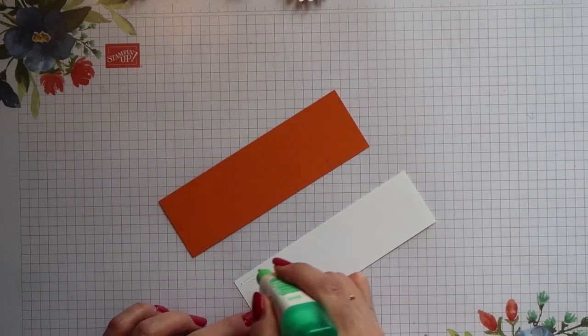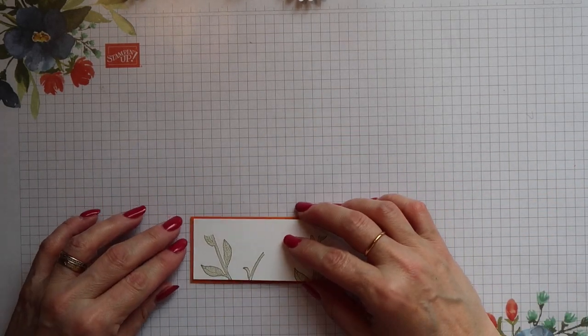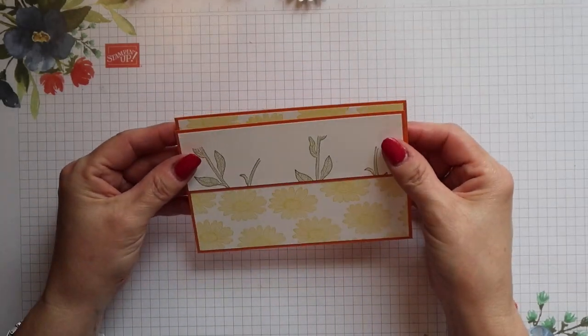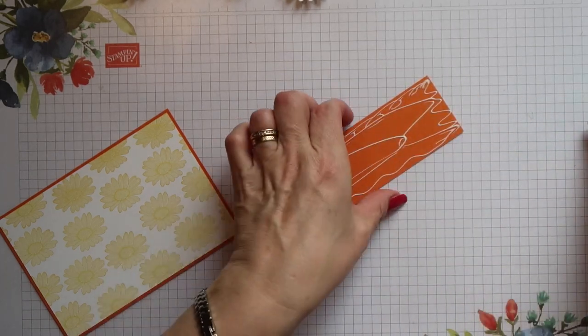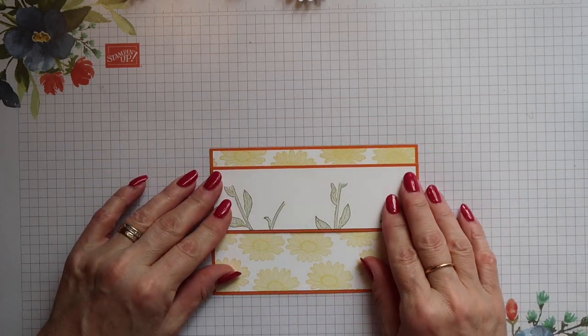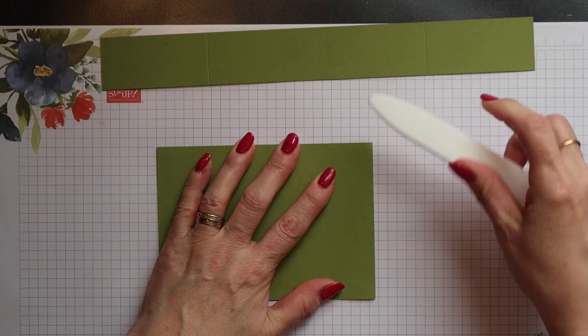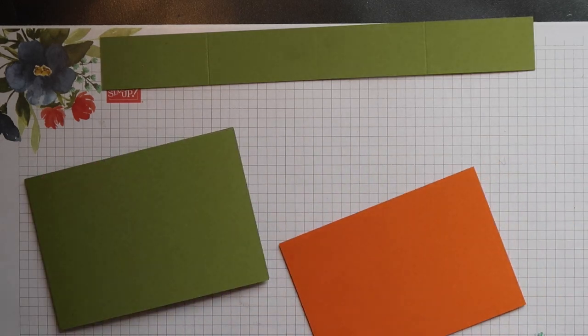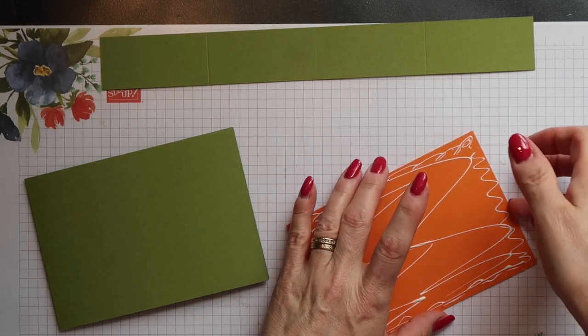The stamped panel can now be added onto its pumpkin pie mat and then this whole section can be added to the front panel of the card. My card base is a side opening landscape card. This is just half a sheet of standard cardstock scored down the middle and folded. The front panel can then be added as well as the back panel and both inside panels.